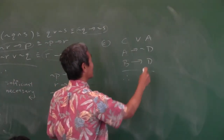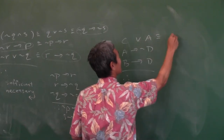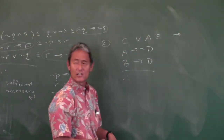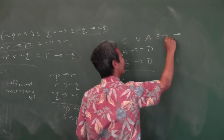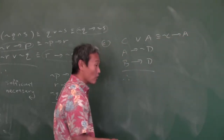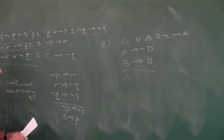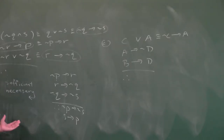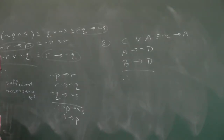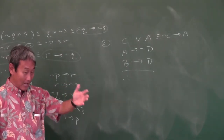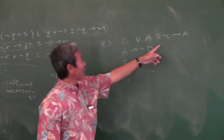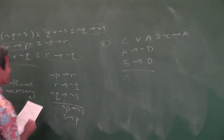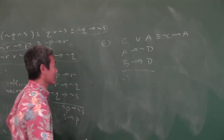Now that we have this, the first thing you should do is change the OR to a conditional. How do you change OR to conditional? Negate the first, leave the second one alone. All the equivalences in the notes are super important. Now I have three conditional statements — all you've got to do is match them up using the law of syllogism.